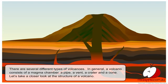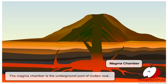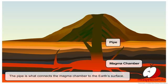Let's take a closer look at the structure of a volcano. The magma chamber is the underground pool of molten rock. The pipe is what connects the magma chamber to the Earth's surface.